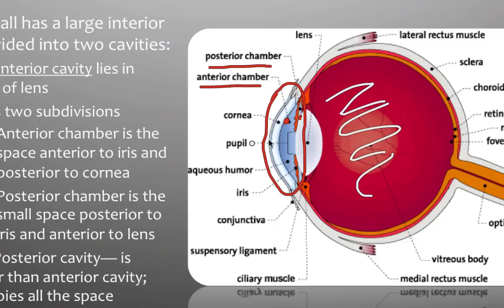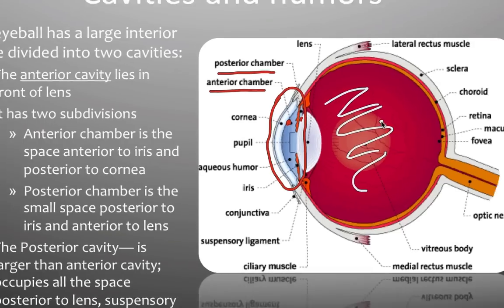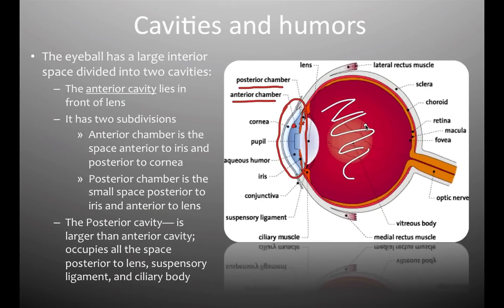In front of the lens, you have a very watery type of fluid. Behind the lens, you have a more jelly-like, semi-solid type of liquid. The posterior cavity is obviously much bigger than the anterior cavity, and it's behind the lens, the ciliary bodies, and the suspensory ligaments.